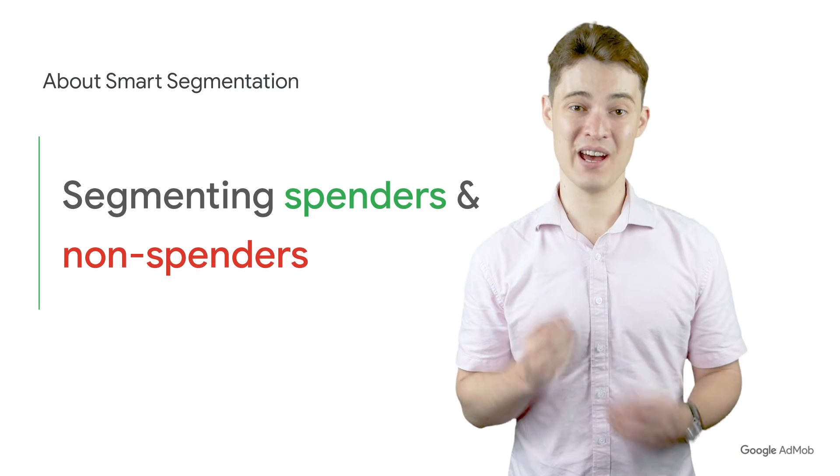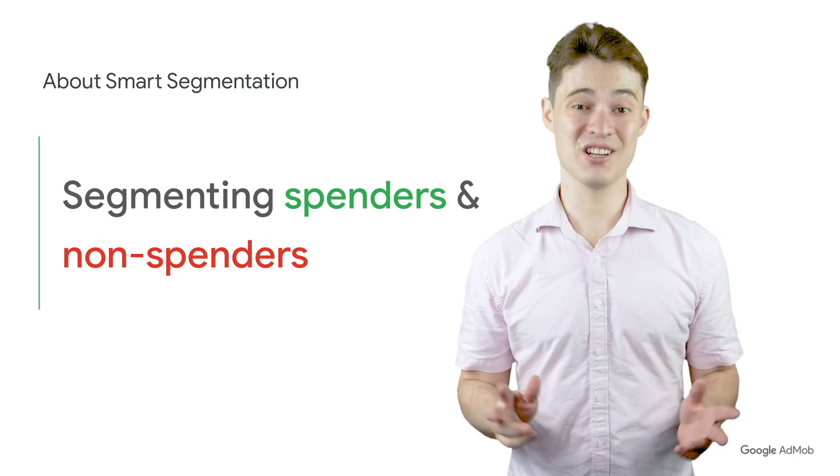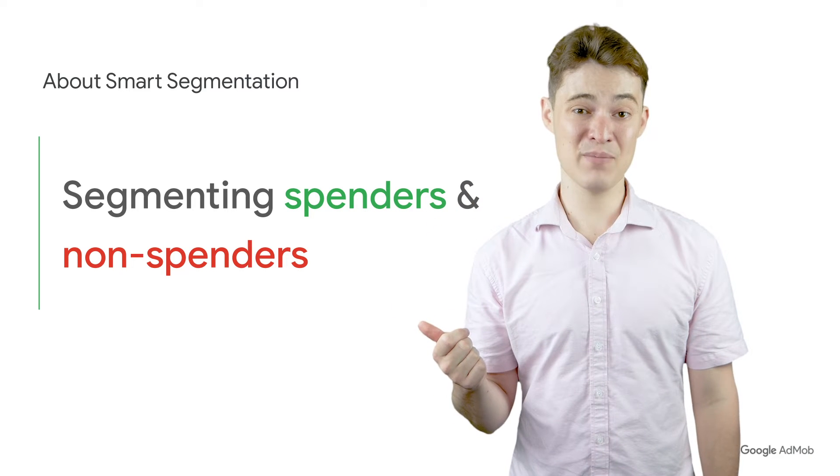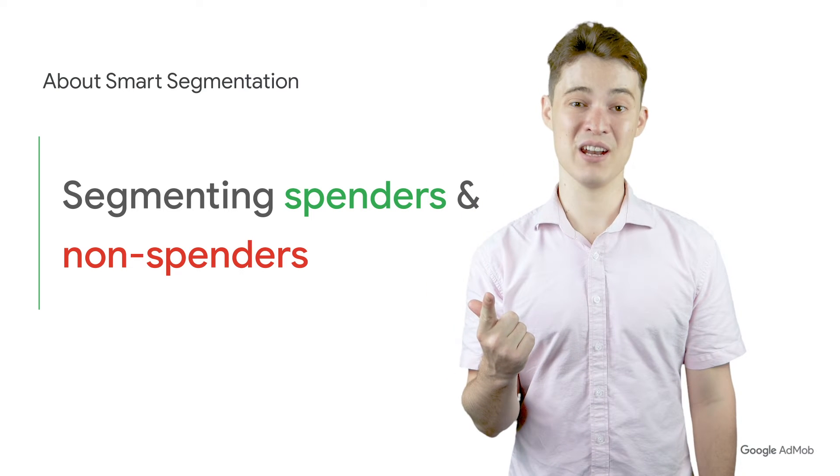As an overview, Smart Segmentation is a feature developed by AdMob. It uses Google machine learning to divide users into two segments: those who are likely to spend money within your app and those who are unlikely to spend money within your app. Many developers who are already segmenting are likely doing so with historical data. Smart Segmentation is a more accurate tool that only shows ads to users who are unlikely to spend within your app, providing a simple solution to help monetize non-paying users while preserving a premium experience for paying users.